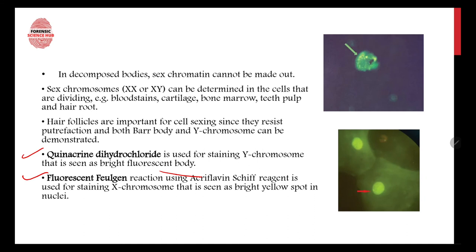In decomposed bodies, sex chromatin cannot be made out because it is decomposed. However, sex chromosomes (XX or XY) can be determined in dividing cells. Examples of cells that can be studied include blood stain cells, cartilage, bone marrow, teeth pulp, and hair root follicles — which are very important because they resist putrefaction.